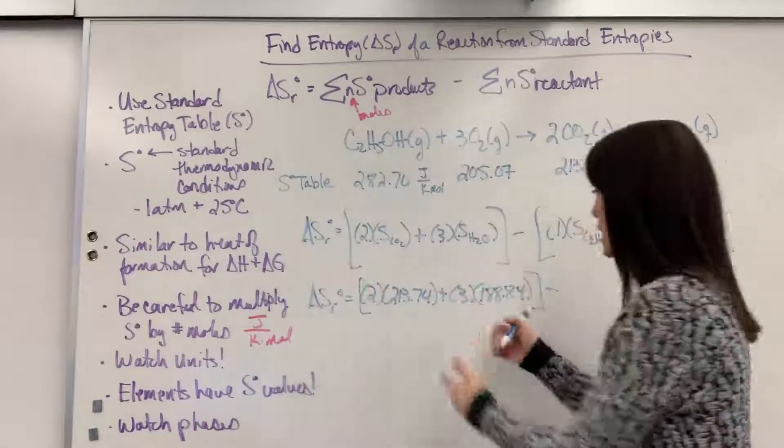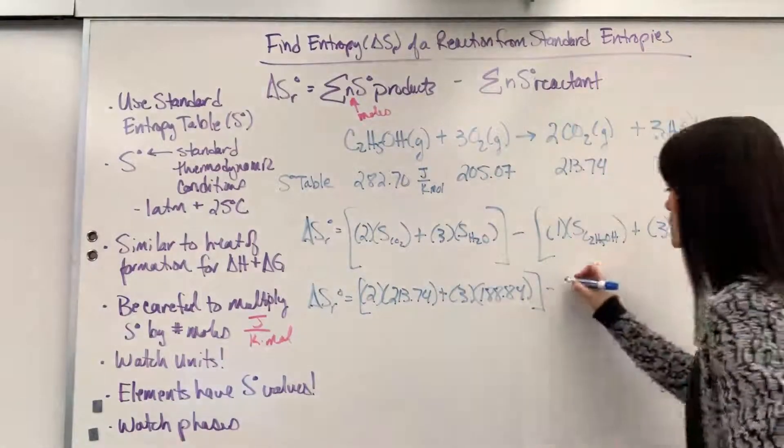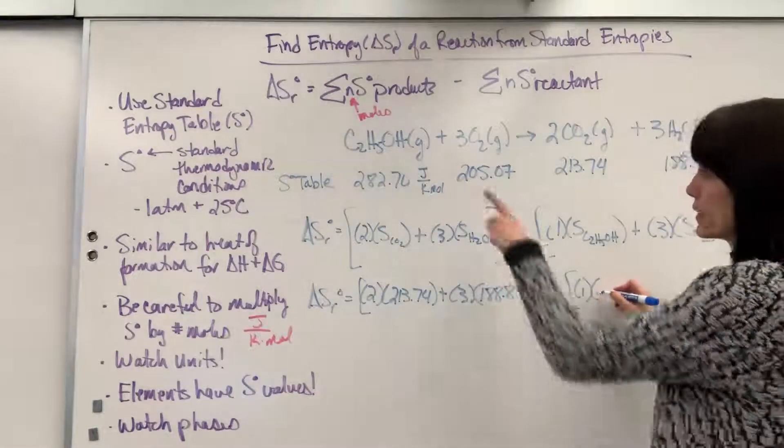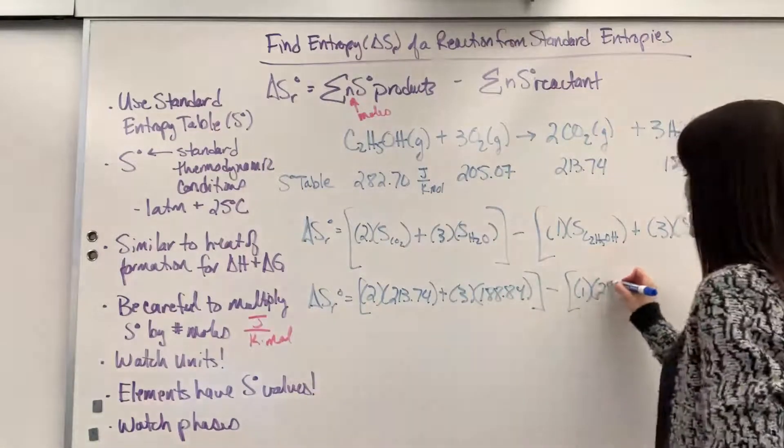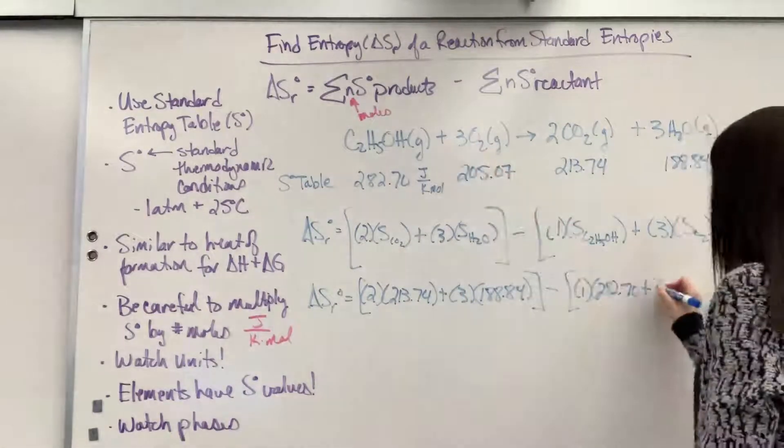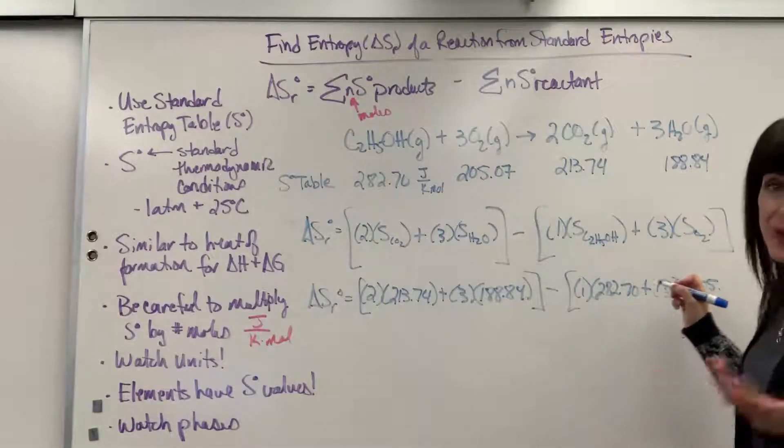So that's going to be my sum of entropy for products, minus, now here's going to be the sum for the entropy of reactants. We have one times the entropy of ethanol, 282.70, plus three moles, times the entropy of oxygen, which was 205.07.